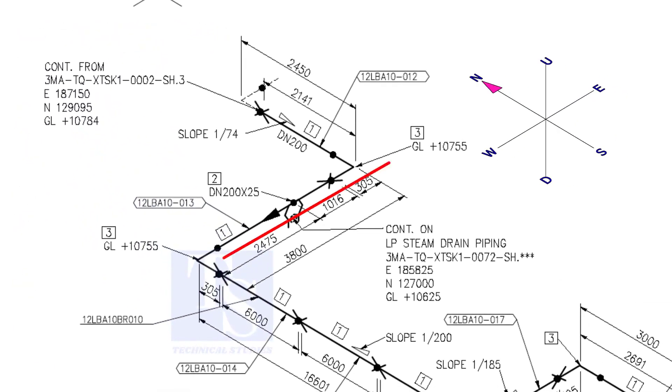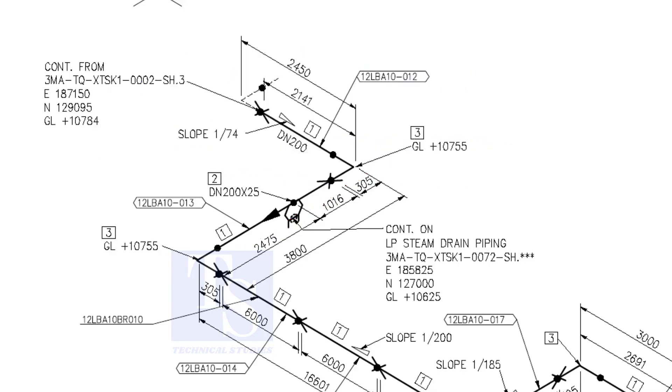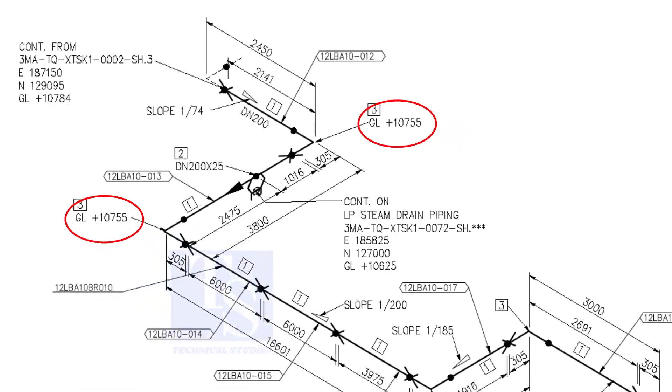Now the pipe turns to the west. Note that in this portion, the pipe's elevation is the same — there is no slope.